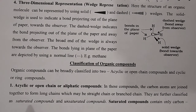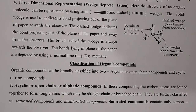Acyclic compounds are further classified as saturated and unsaturated compounds. Saturated compounds have carbon atoms associated with carbon via single bonds only. In unsaturated compounds, carbon is associated with carbon via double or triple bonds — those are alkenes and alkynes.